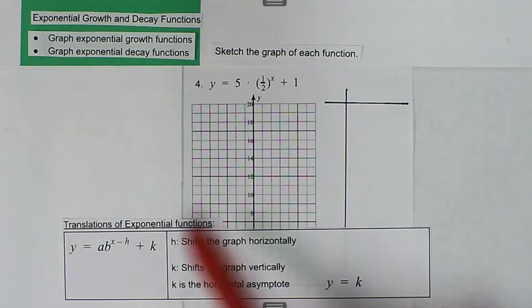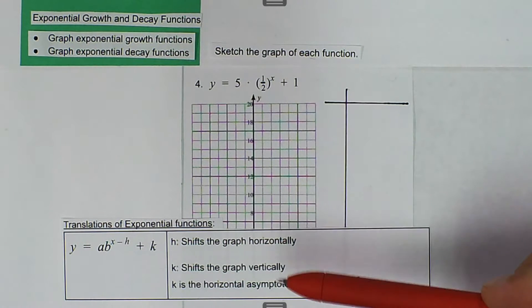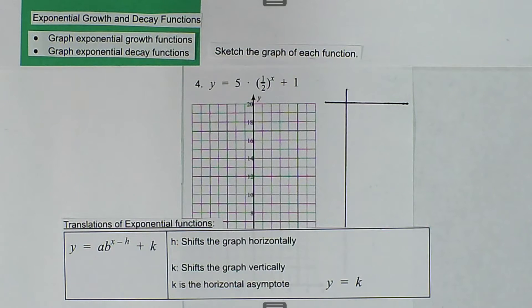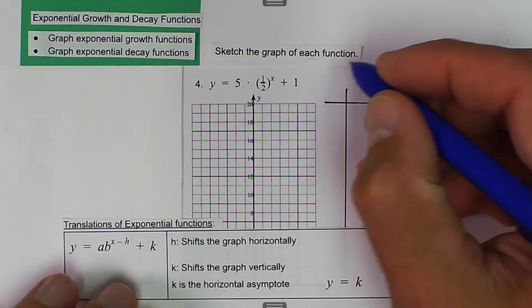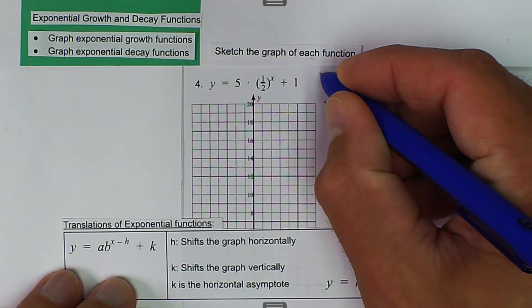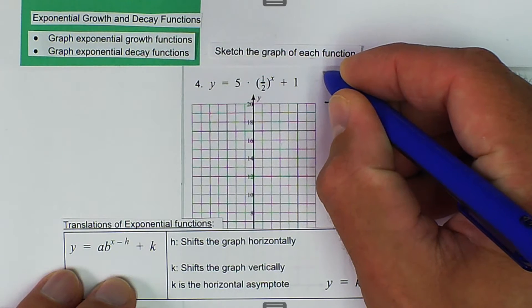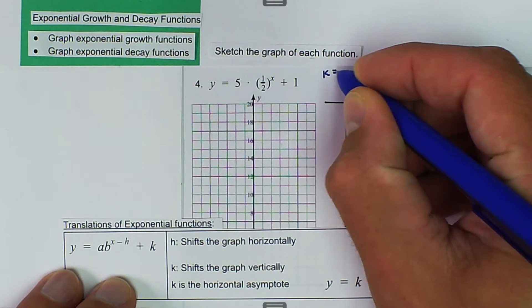There is no h value, so we're not going to shift left or right, and the k value is plus 1, so we know that the horizontal asymptote is going to be y equals 1. So we know that k is equal to 1.